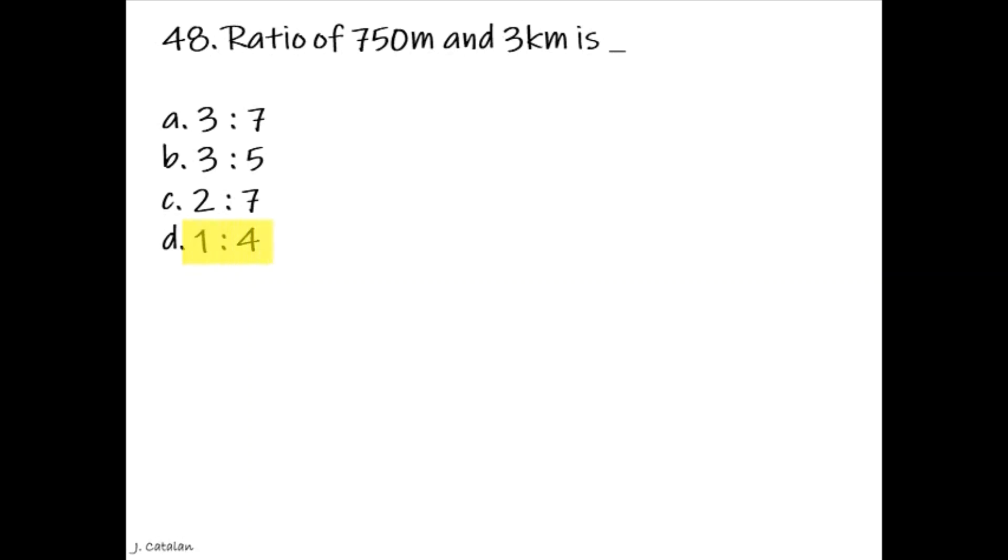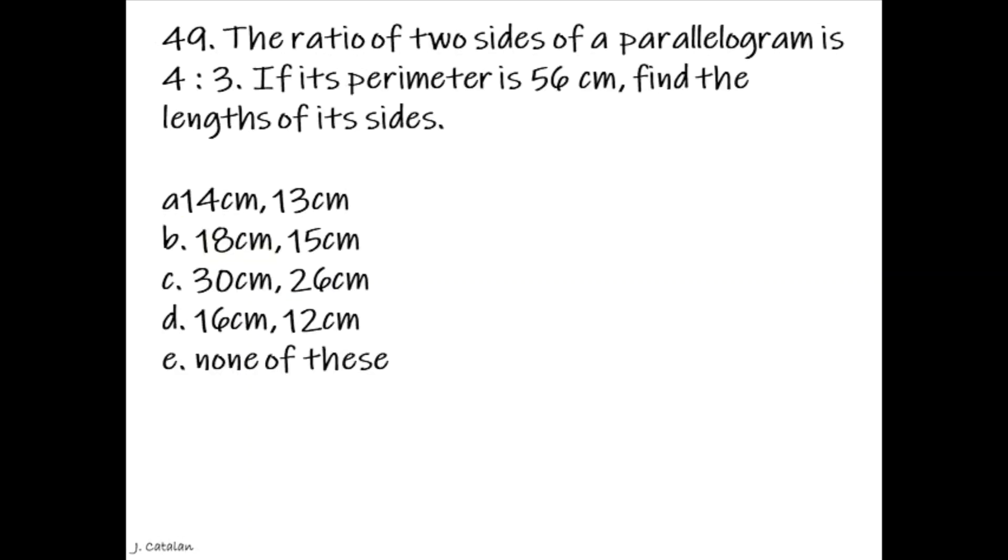1 is to 4. Question. The ratio of two sides of a parallelogram is 4 is to 3. If its perimeter is 56 centimeters, find the length of its sides.